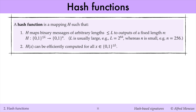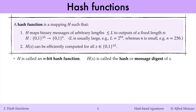Typically, L is very large — for example, L might be 2 to the power 64 — while n is much smaller, for example n might be 256. H of X must be efficiently computable for every message X in its domain. Recall H is an n-bit hash function, and H of X is the hash or message digest of the message X.